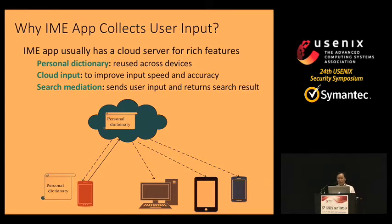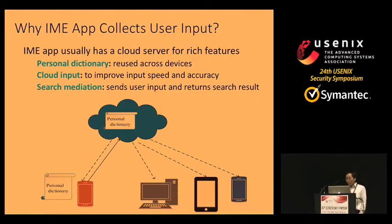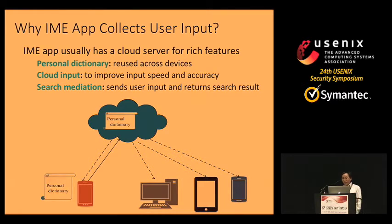There are legitimate reasons why an IME app has a cloud server to store and transfer user input. First, it may be needed to generate personal dictionaries that can be used across devices. Second, many IME apps have a cloud input feature where the cloud server uses its massive data to improve user speed and accuracy. Many IME apps, especially those from major search engines like Google and Baidu, have a search mediation feature that intercepts user input and returns search results.